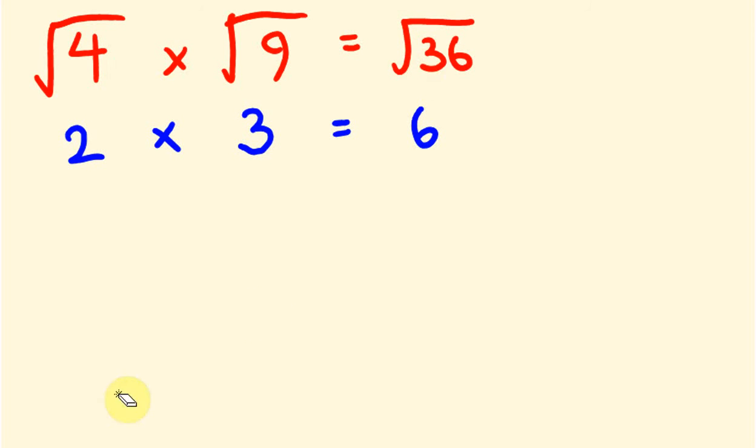And this is the rule for multiplying surds: the square root of a times the square root of b equals the square root of a times b.